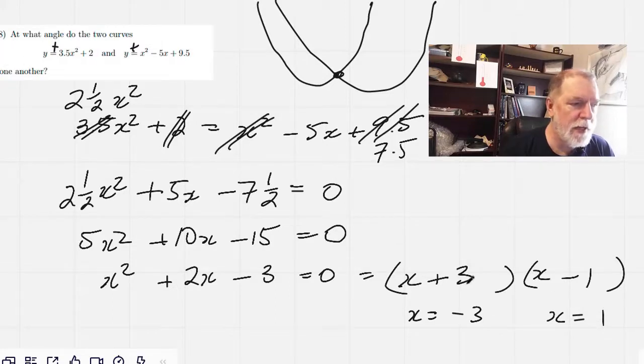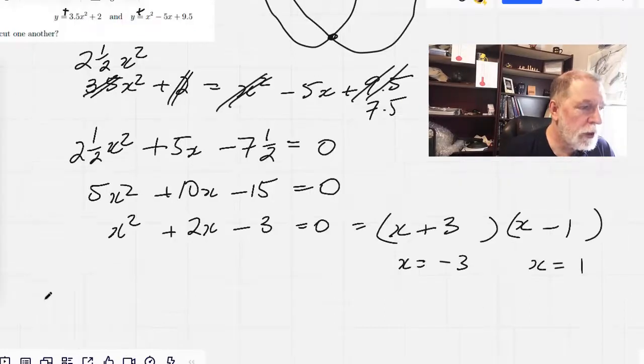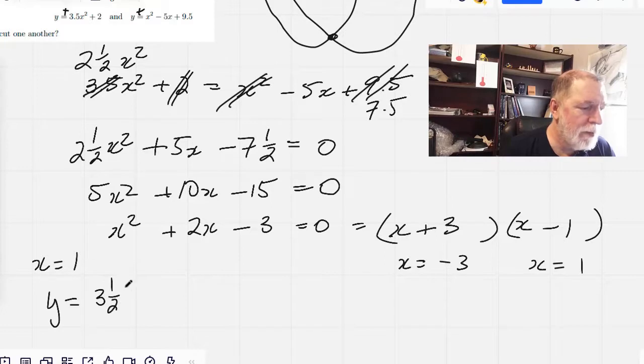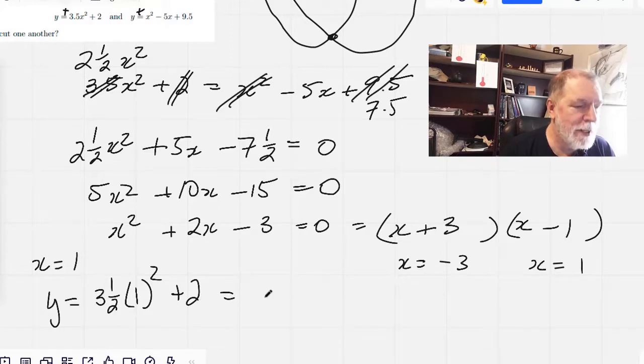Let's bring these values back to our original equations. We'll do x equals 1 first. y equals 3 and a half times 1 squared plus 2. So that equals 3 and a half plus 2. So that's going to be 5 and a half. So we've got this point 1 comma 5 and a half.